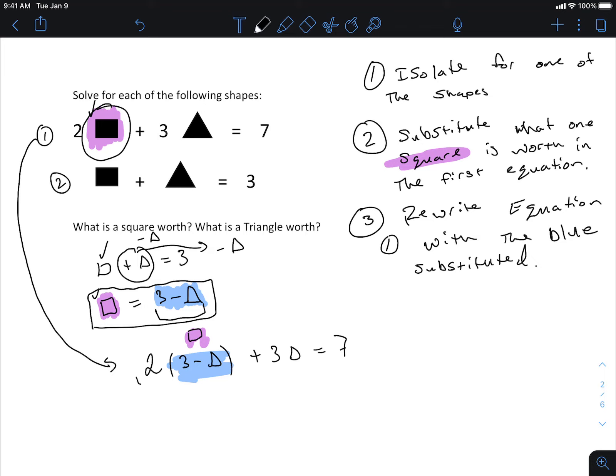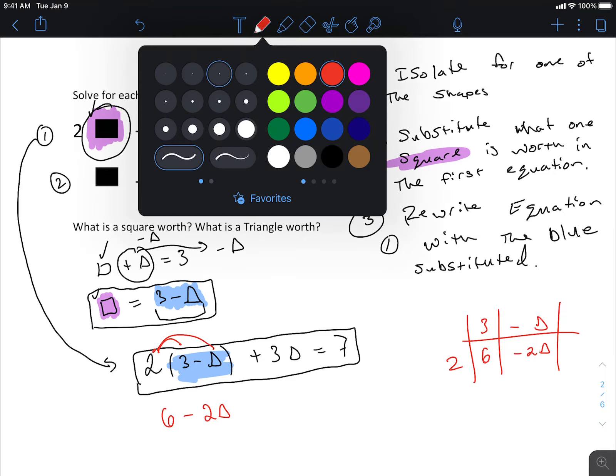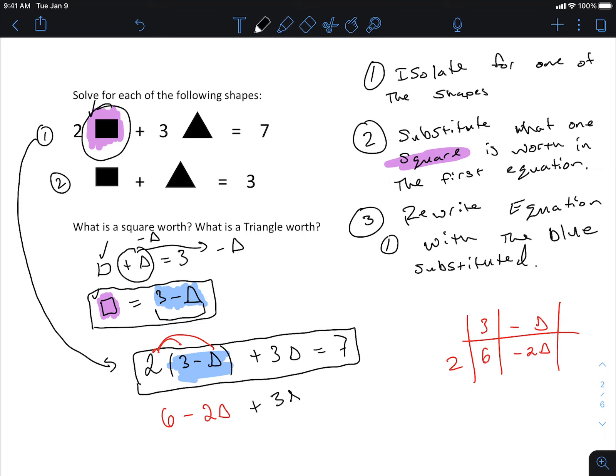And then you write the rest of it, plus three triangles has to equal seven. I no longer, in this little box here, I no longer see any squares. We've done that on purpose so that we can turn it into something where we can just solve for the triangle. So now we're at the stage where we did the expansion, or we did the table method, where we had three minus a triangle with a two, and then we filled in the middle with multiplications, so we've got six minus two triangles, that's the red piece here, so I'm going to get six minus two triangles, plus three triangles has to equal seven.